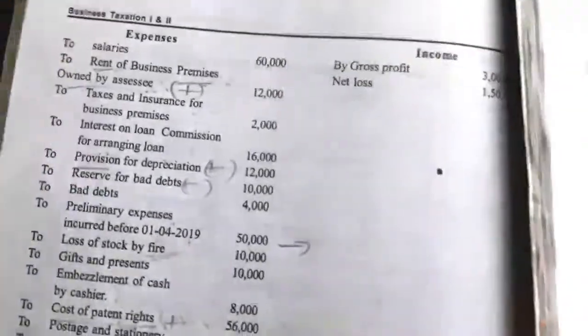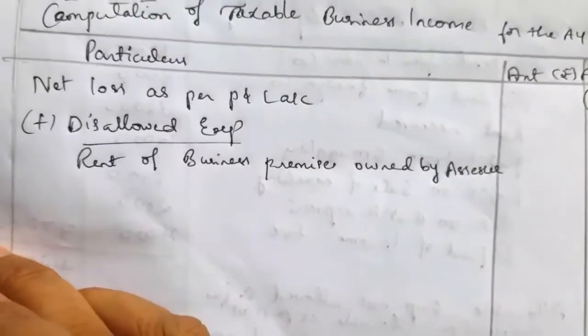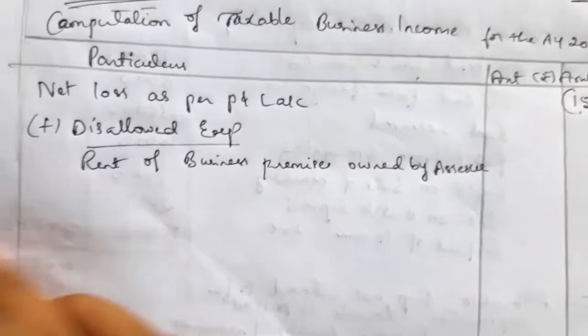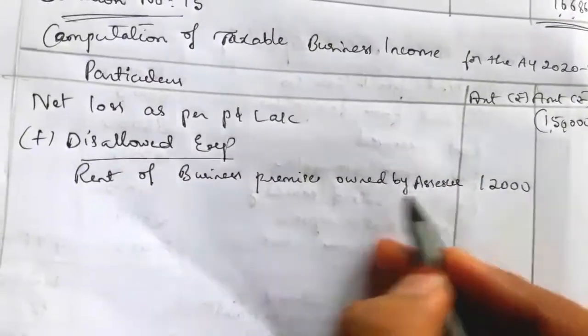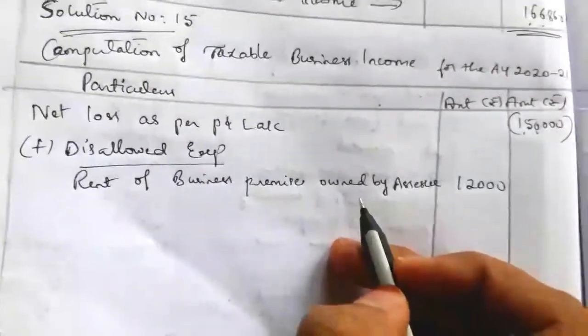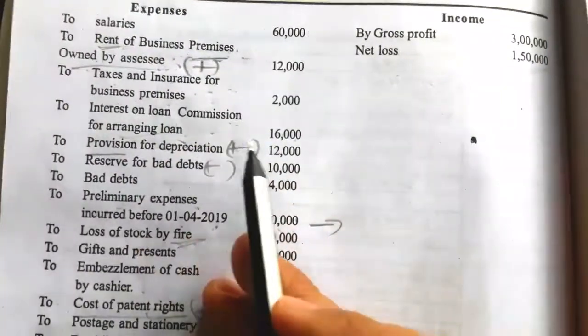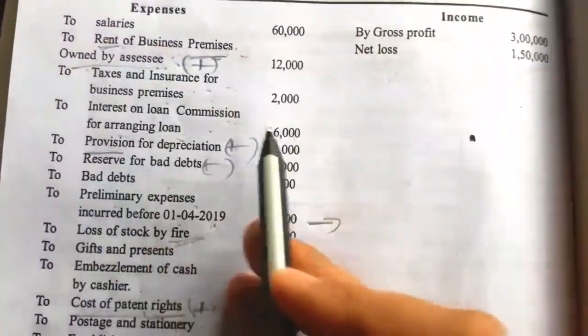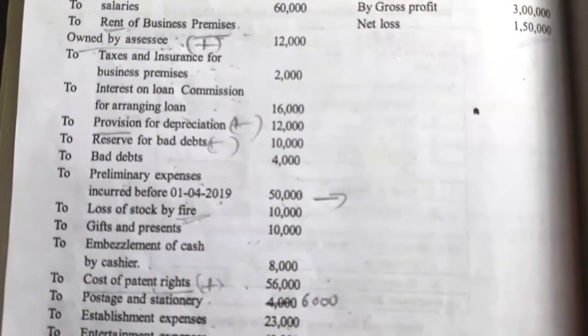Salaries — allowed business expenses. Rent of business premises owned by SSC — disallowed: 12,000. When SSC is the owner, rent paid is a disallowed expense. Taxes and insurance — allowed. Interest on loan and commission for arranging the loan — allowed. Provision for depreciation — disallowed: 12,000. Reserve for bad debt — disallowed: 10,000. Bad debt — allowed.